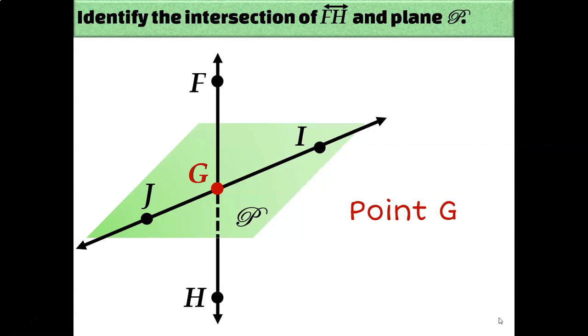But now let's talk about line Ji. I want to know where does line Ji intersect plane P? Now Ji is actually on plane P. Point J is on the plane. Point I is on the plane. So is point G. They're all on the plane. Therefore, the intersection of these two figures is actually the entire line Ji.